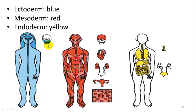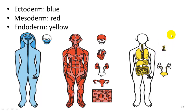In humans, the ectoderm forms our skin, hair, brain, spinal cord, and some skull bones. The mesoderm forms our muscles, blood, reproductive organs, kidneys, heart, and upper skull bones. The endoderm forms our alimentary canal, liver, urinary system, lungs, and part of our cartilage in the neck.